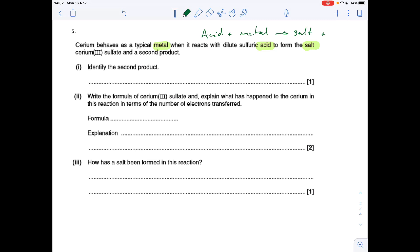So question five starts out by testing our knowledge of basic acid reactions. So we've got an acid reacting with a metal to form a salt. And the other product is hydrogen.